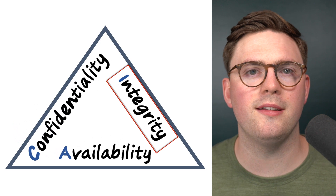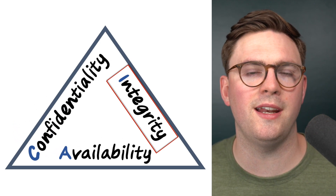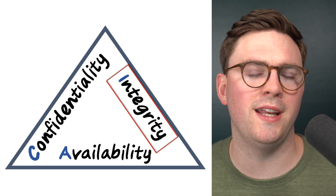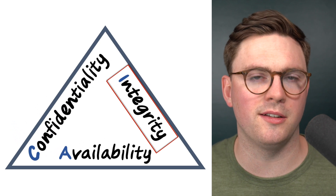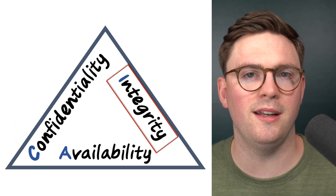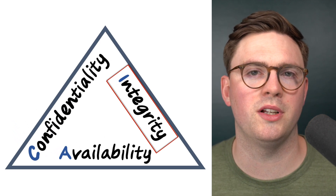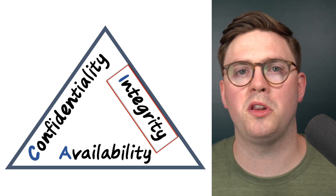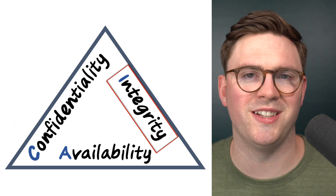Our next principle is integrity — it's important that we have confidence that our data hasn't been tampered with or altered in any way. For example, if we put data into a database that's encrypted and we then decrypt that data, it should be the same as it was when it was originally encrypted. That's the confidence we're looking for with data integrity.